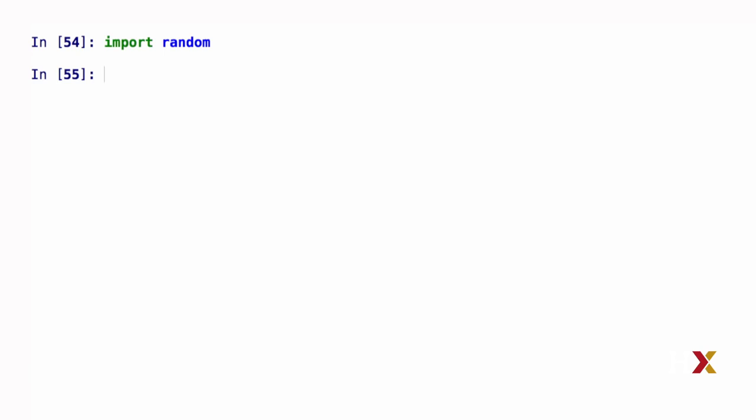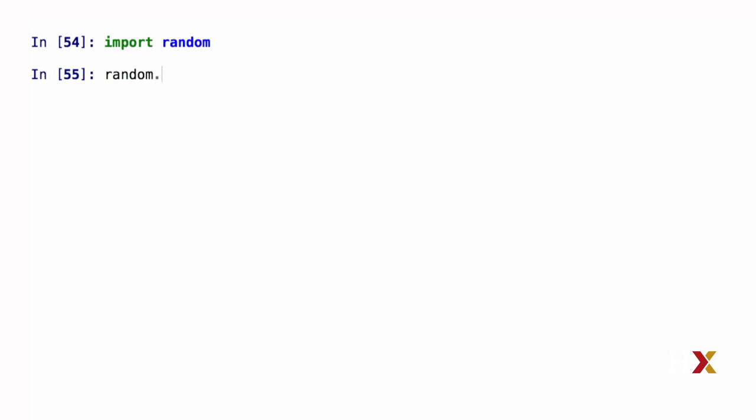Let's think about a simple example where we have a set of numbers contained in a list, and we would like to pick one of those numbers uniformly at random. The function we need to use in this case is random.choice, and inside parentheses, we need a list. In this list, I'm going to just enter a few numbers: